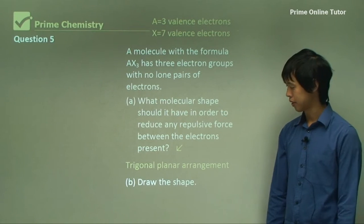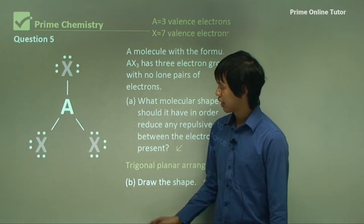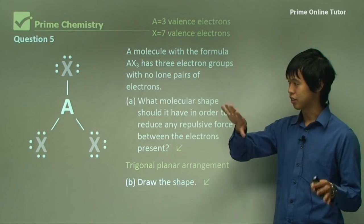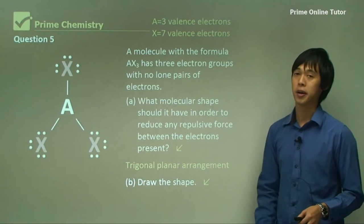And then draw the shape. So it would be something like this. So you've got A in the middle, then three bond structures, bond groups, and then the X's on the outside with their appropriate number of electrons.